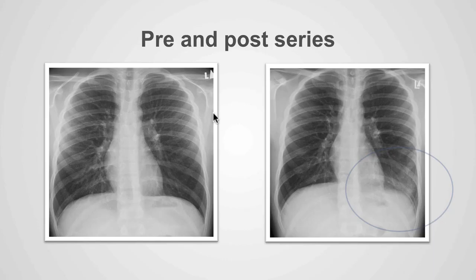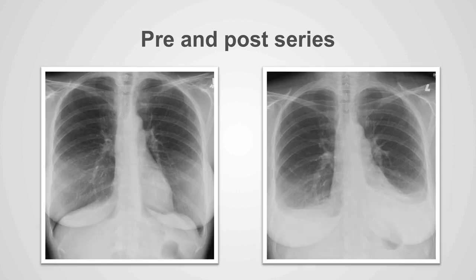Now let's do some example cases. These are two x-rays of the same patient. On the abnormal x-ray, we can identify that within the left side inferiorly there is an increased density — it's too white when compared to the normal x-ray. The reason for this is because the patient has a left-sided pneumonia. On another pair of x-rays, we see whiteness inferiorly on both the right and left sides, which was not present on the previous examination. The patient has developed bilateral pleural effusions.